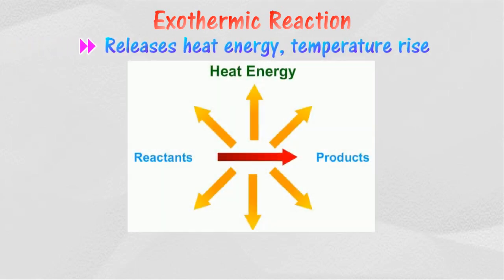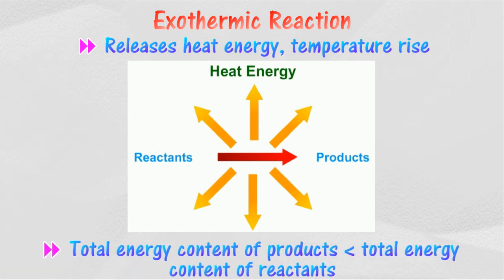An exothermic reaction is a chemical reaction that releases heat into its surroundings. The released heat energy causes the rise of temperature in the surroundings. The value of energy change for exothermic reactions is negative because of the heat energy released. Therefore, the total energy content of products is lower than the total energy of reactants.